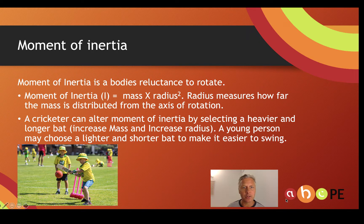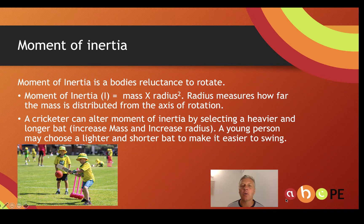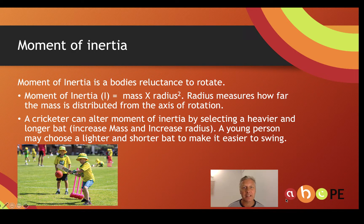Moment of inertia is a body's reluctance to rotate. The equation is: moment of inertia equals mass times radius squared. The radius measures how far that mass is distributed from the axis of rotation. A cricketer can alter the moment of inertia when they select their cricket bat — choosing a heavier, longer bat gives a greater moment of inertia, and as long as they can swing it with the same angular velocity, they get more angular momentum and hit the ball further.